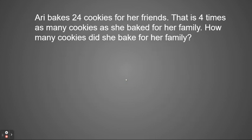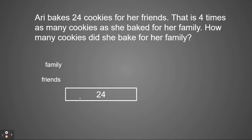Let's look at an example. It says: Ari bakes 24 cookies for her friends. That is four times as many cookies as she baked for her family. How many cookies did she bake for her family? We have Ari baking cookies — some for her friends and some for her family. We have family and friends as our two categories. She bakes a total of 24 cookies for her friends, so we know her total is 24. Since that is our total, we put that as our bottom number.